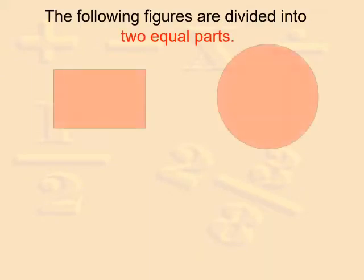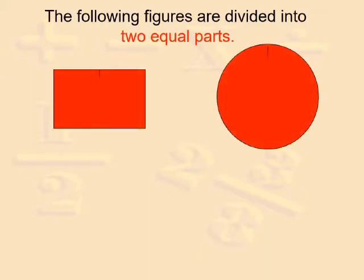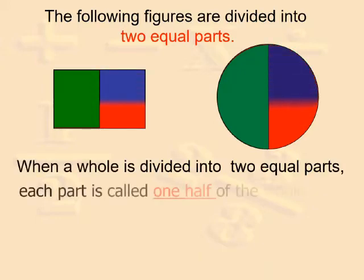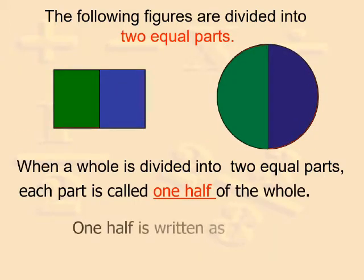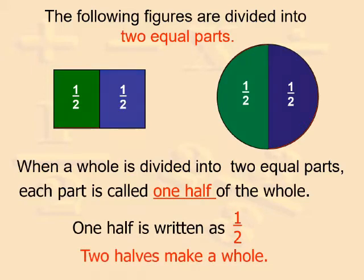Children, you know what are halves, thirds, and fourths, so now let us recall them. The following figures are divided into two equal parts. When a whole is divided into two equal parts, each part is called one half of the whole. One half is written as one by two, and two halves make a whole.